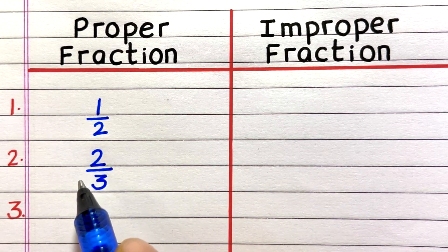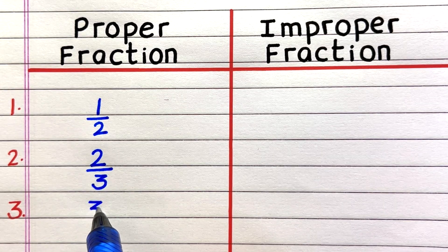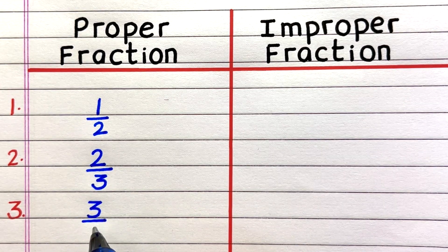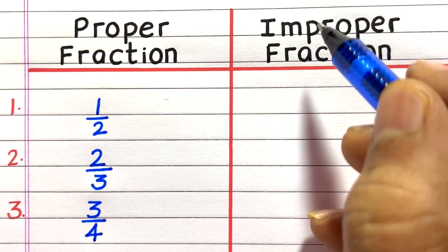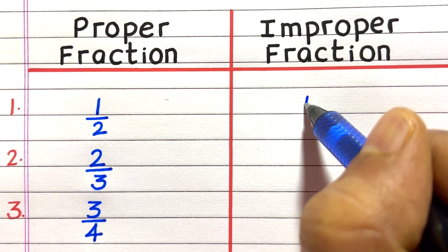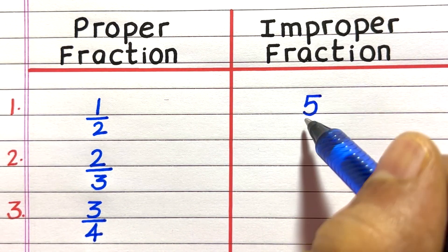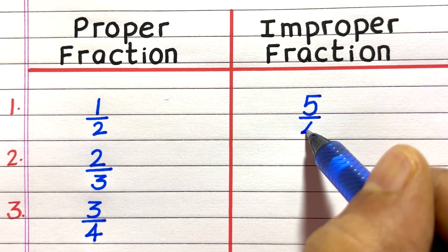First example of a proper fraction is 1 by 2. Second, 2 by 3. Third, 3 by 4. First example of an improper fraction is 5 by 4.